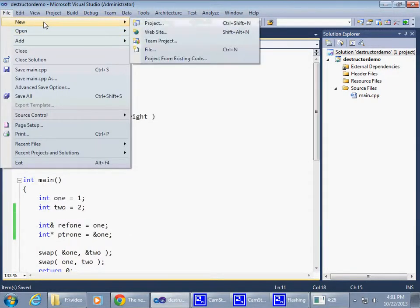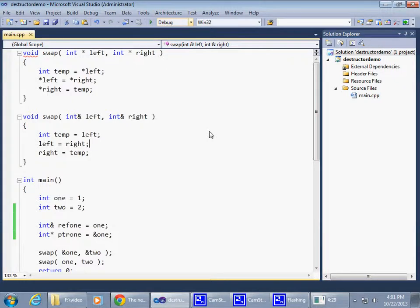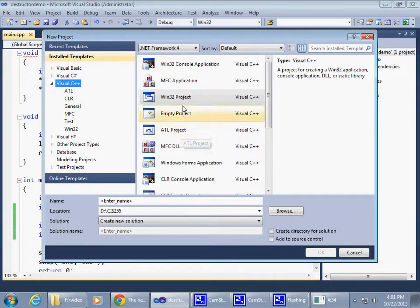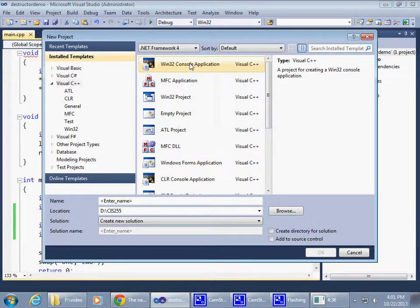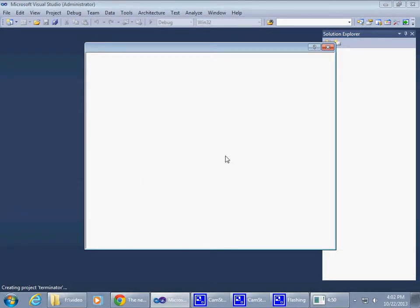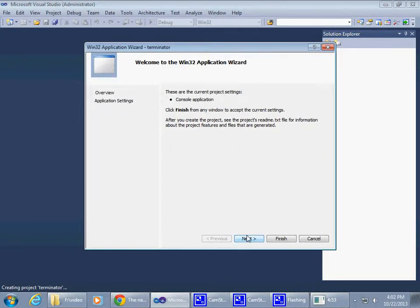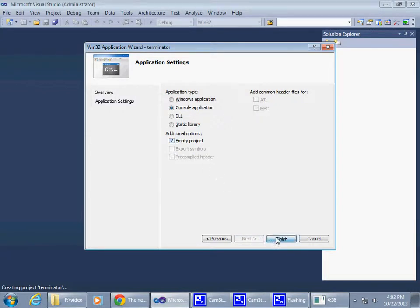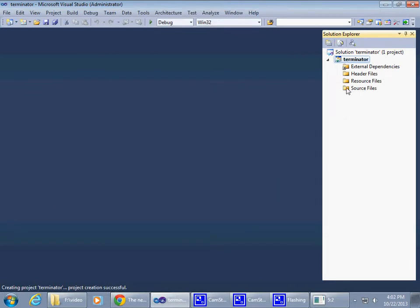All right, so just create a brand new project and to demonstrate this, terminator, and it's a good name to use for the project name, terminator. Okay, so let's do that. So another Win32 console application, I will name it terminator, okay, and click all right. All right, again we'll start with an empty project.